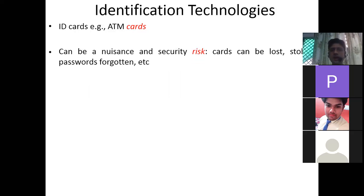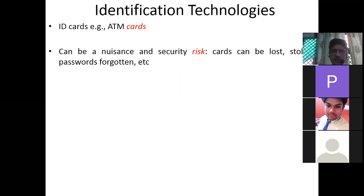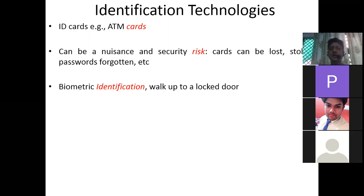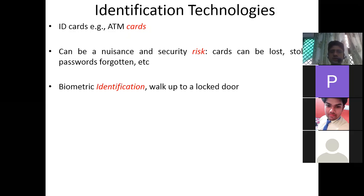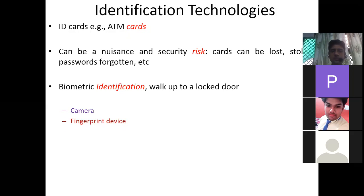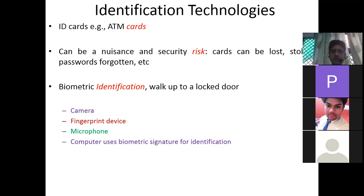Cards can be lost, stolen, or passwords forgotten — so they can be a security risk. This is where biometric identification comes in. In multinational companies, for example, a door will open only with your thumb impression. Identification is done using camera, fingerprint device, and microphones — using biometric signature files to identify faces, eyes, fingerprints, and voice patterns.